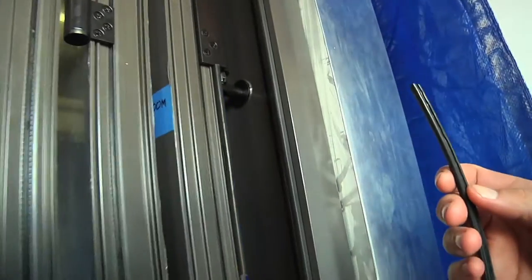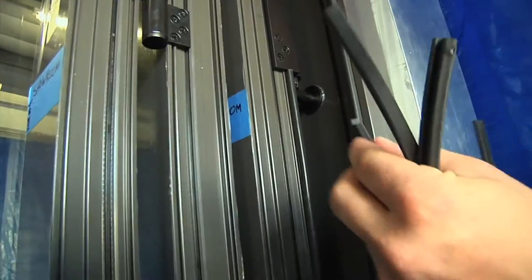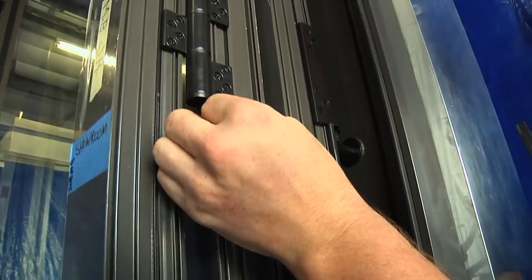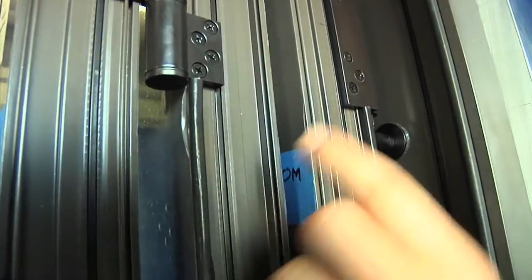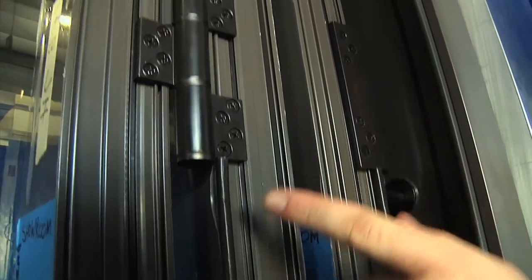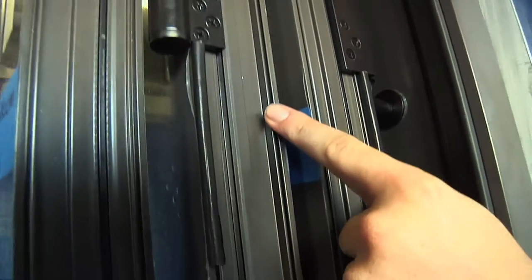When installing the large P to the panel, you always install it on the side of the panel that has two hinge leads. The large P goes here and here.